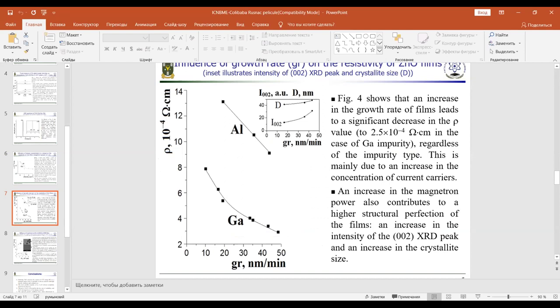Figure 4 shows that an increase in the growth rate of films leads to a significant decrease in the resistivity value to 2.5×10⁻⁴ Ω·cm in the case of gallium impurity, regardless of the impurity type. This is mainly due to an increase in the concentration of current carriers. An increase in the magnetron power contributes to higher structural perfection of the films, an increase in the intensity of the 002 XRD peak, and an increase in the crystallite size.